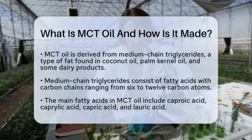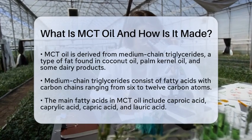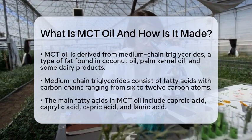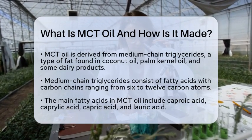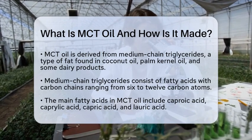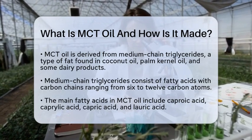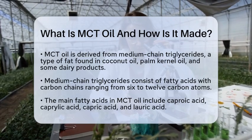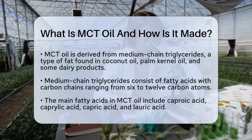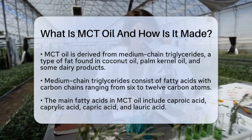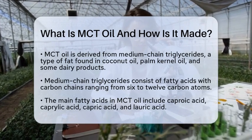MCT stands for medium-chain triglycerides. These are a type of fat found in foods like coconut oil, palm kernel oil, and certain dairy products. Medium-chain triglycerides consist of fatty acids that have carbon chains ranging from 6 to 12 carbon atoms. The specific fatty acids include caproic acid, caprylic acid, capric acid, and lauric acid. These fatty acids are combined with a glycerol molecule to form triglycerides.